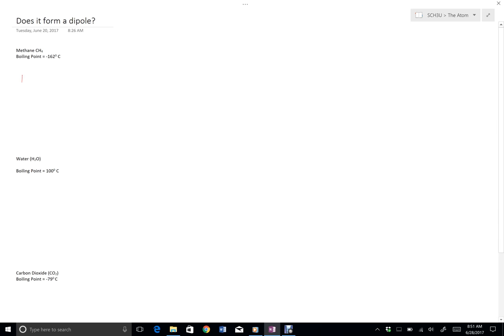So a boiling point at minus 162 automatically makes me think we're going to have no dipole here, but let's just see how that works out. So the first thing that we need to do, we need to check two things. First of all, we need polar covalent bonds.